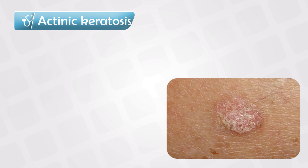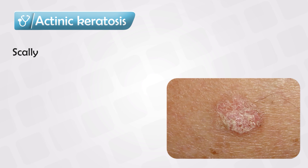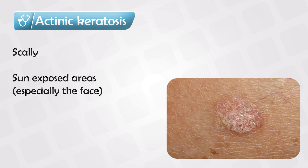Actinic keratosis is a scaly skin lesion that involves an area that is chronically exposed to the sun, mainly the forehead. These lesions, however benign, are precursors for squamous cell carcinoma.